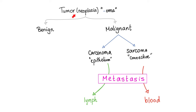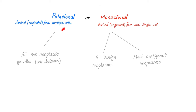Tumors, neoplasia — any word that ends in OMA, except Oklahoma. Malignant tumors are the same as cancers. Cancers could be carcinomas or sarcomas. Carcinoma is a cancer of epithelial tissue; sarcoma is cancer of connective tissue. When carcinomas metastasize, they prefer to go to the lymph first. When sarcomas metastasize, they prefer the blood.